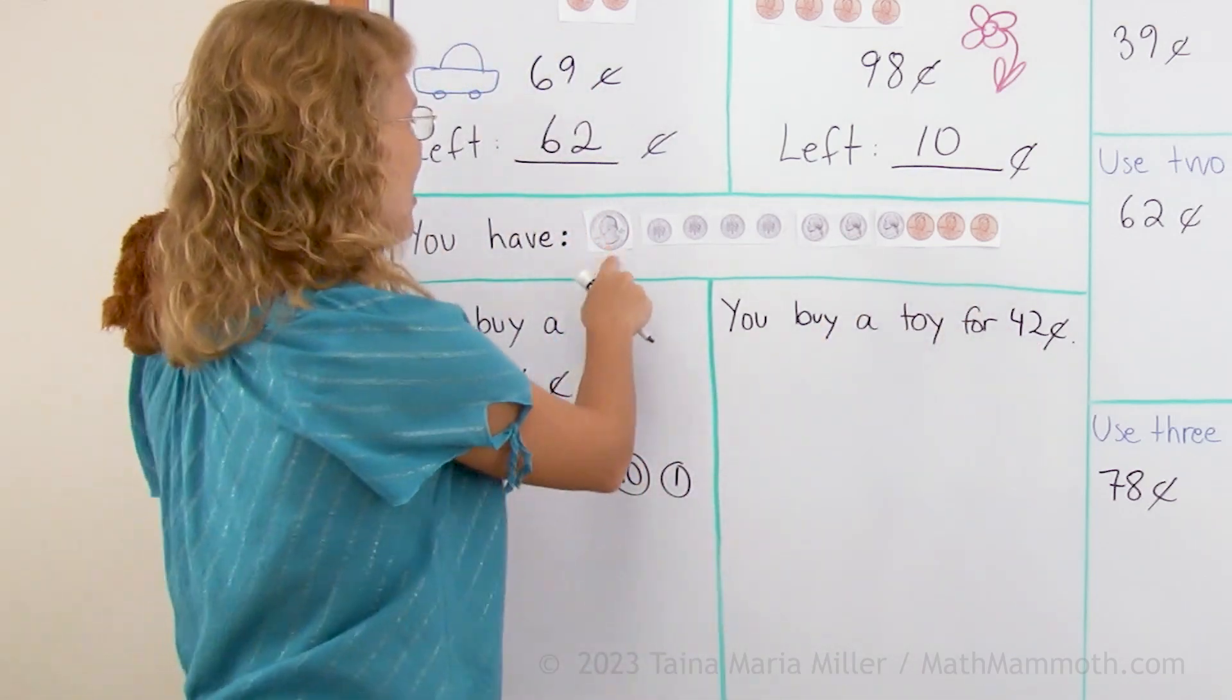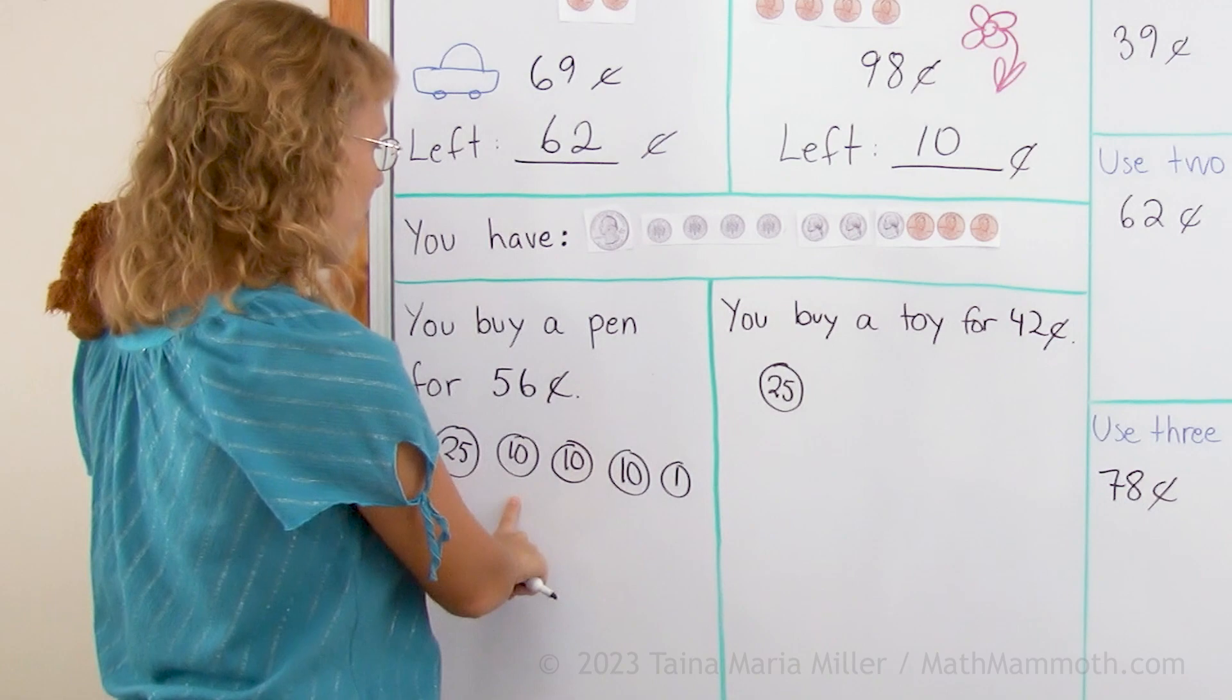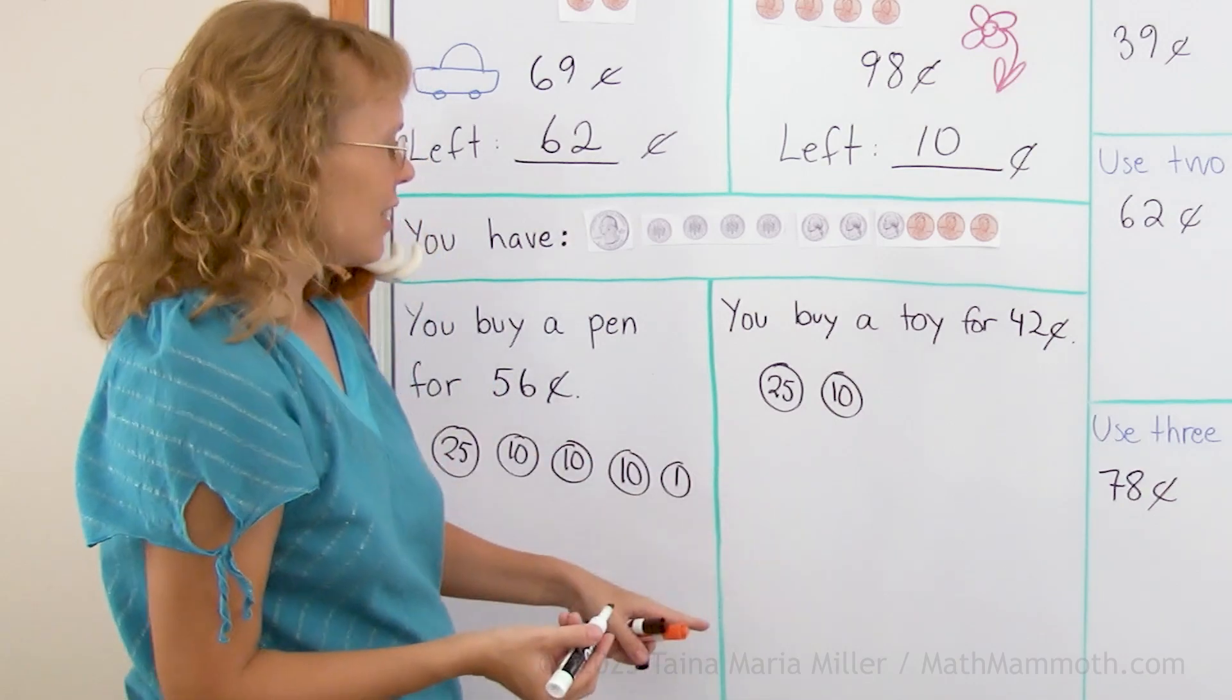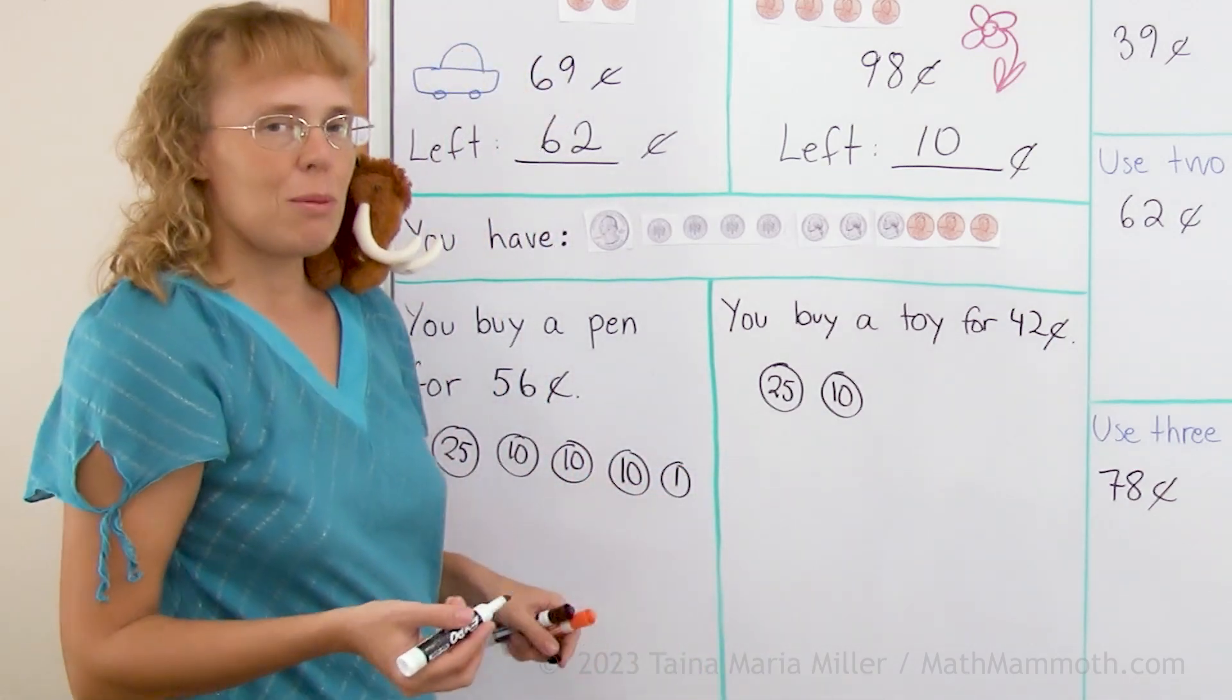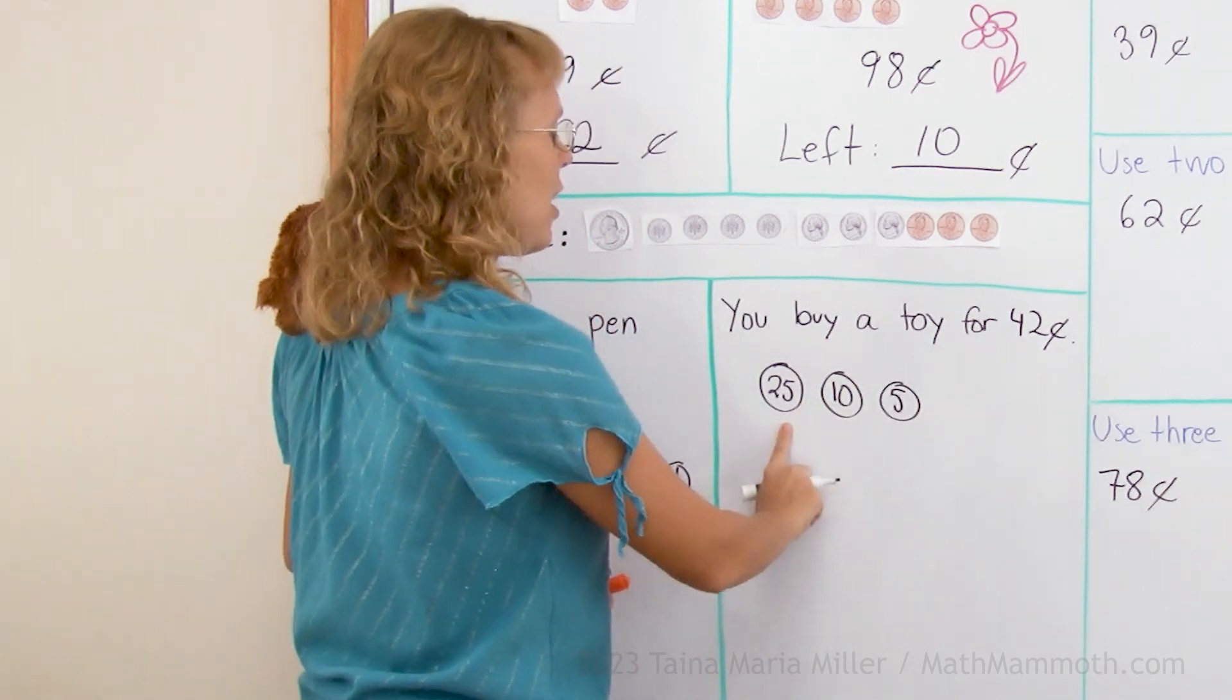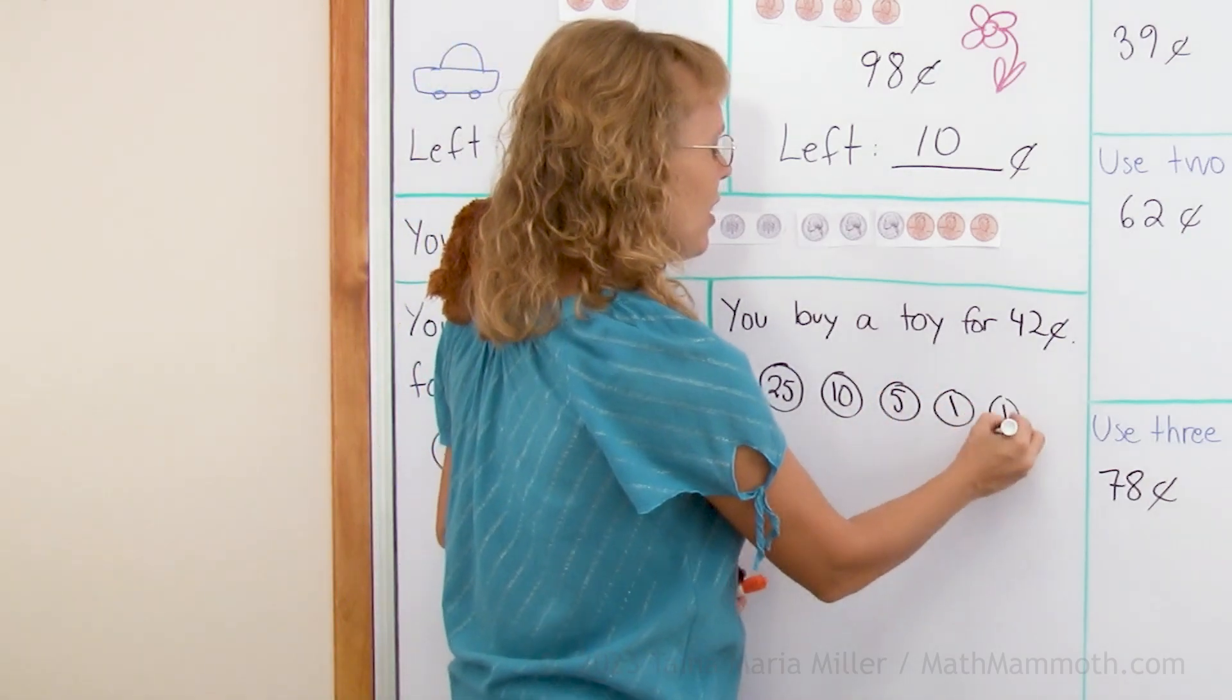42 cents. I'll need my quarter again, right? And then let's say that I use a dime. So that would be 35 cents. And then I don't want to use more dimes. It would go to 45 cents. That's too much. So I will take a nickel, right? 25 and 10 more, 35 and 5 more is 40. And then just 2 pennies. And that's it.